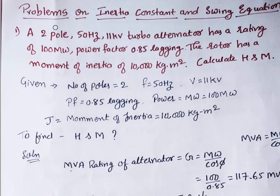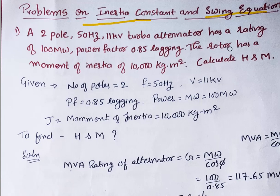Good morning. Today we will discuss problems on inertia constant and the swing equation. The first question: a 2-pole, 50 Hz, 11 kV turbo alternator has a rating of 100 MW, power factor 0.85 lagging, the rotor has a moment of inertia of 10,000 kg·m². We need to calculate the inertia constant H and the angular momentum M.